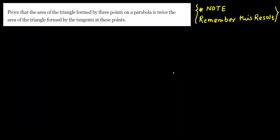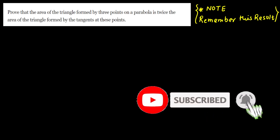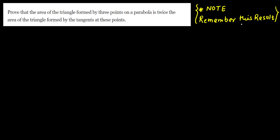Hello everyone, welcome to question number 4 on the advanced question series on parabola. Today's question is: prove that the area of the triangle formed by three points on the parabola is twice the area of the triangle formed by the tangents at those points. This result is very important and has previously been asked in IIT JEE.